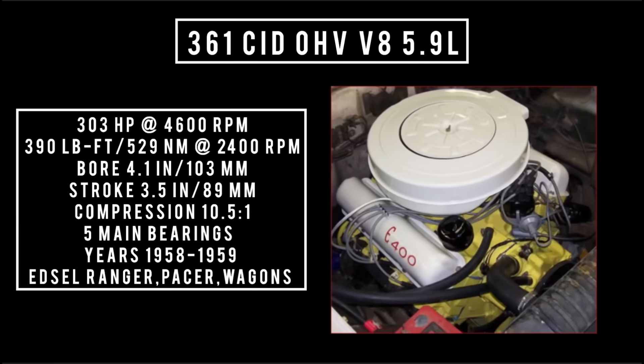Also introduced in 1958: the 361 cubic inch displacement overhead valve V8, 5.9 liters. It's good for 303 horsepower at 4,600 RPM, 390 pound-feet or 529 newton meters at 2,400 RPM, with a bore of 4.1 inches and a stroke of 3.5 inches. Compression was 10.5 to 1. Five main bearings. This engine was used between 1958 and 1959, mostly found in the Edsel Ranger, Pacer, and Villager. In 1959 this engine goes by the name Super Express V8.